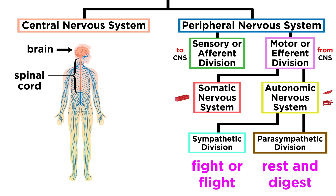We have just barely scratched the surface on the complexity of the nervous system, and we will continue to refer back to it in order to build upon our knowledge as necessary, while we continue to learn about human anatomy. So now let's move forward and learn about some other systems in the body.